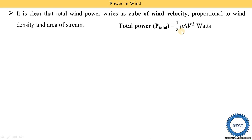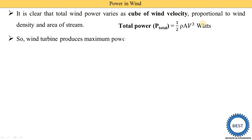If the density of air is increased, total power increases. If the area of the windmill is increased, total power increases. If the wind velocity V is increased, total power also increases. All terms — ρ, A, and V — are directly proportional to total power. Wind turbines produce maximum power at high wind velocity.